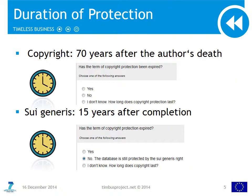Copyright and sui generis protection both expire after a certain amount of time. Copyright protection expires 70 years after the death of the author. If a database has more than one author, the expiration period does not begin until all authors are dead. Sui generis protection expires 15 years after the completion of a protected database.